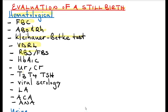Also do a syphilis test, screen for diabetes with a random blood sugar, fasting blood sugar, and glycated haemoglobin. Do urea and creatinine to assess renal function. Also do T3 and T4 to screen for thyroid disease, virus serology especially for toxoplasmosis, lupus anticoagulant, and anti-cardiolipin antibodies to screen for autoimmune diseases.